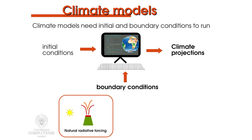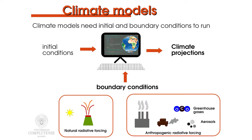For instance, it receives the sun's energy, which might change slightly through the solar cycle. Moreover, the current climate is subjected to variable radiative forcing coming from greenhouse gases and aerosols. All in all, the models need information on such changes. This is what we call a boundary condition.